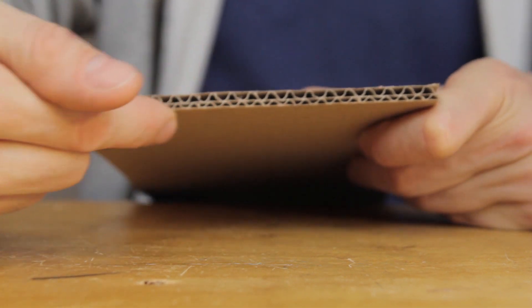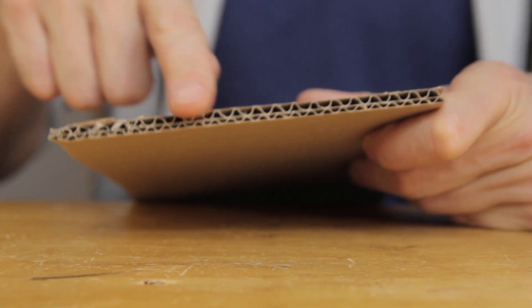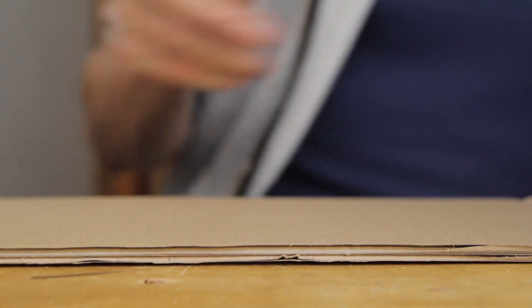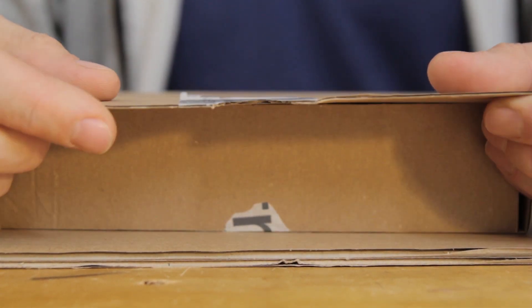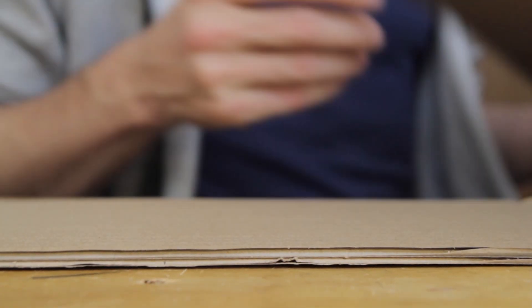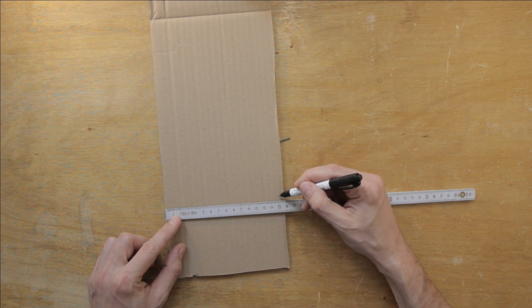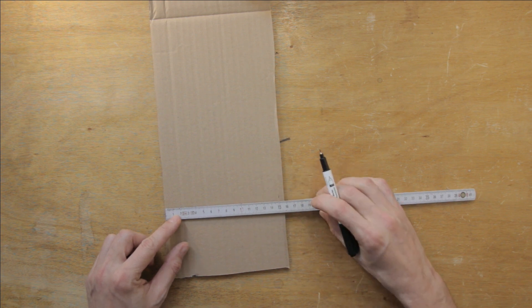Instead, we'll be using some of this corrugated cardboard. This piece here is double corrugated and is very strong. Notice that the two sides have different sizes of corrugation, which will be important later on. You can also use thinner cardboard, like what this box is made out of, but most of my designs use the thicker stuff.